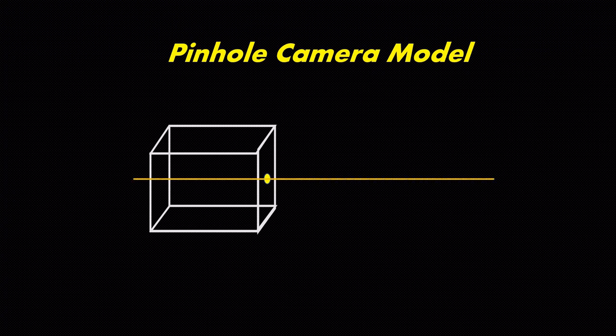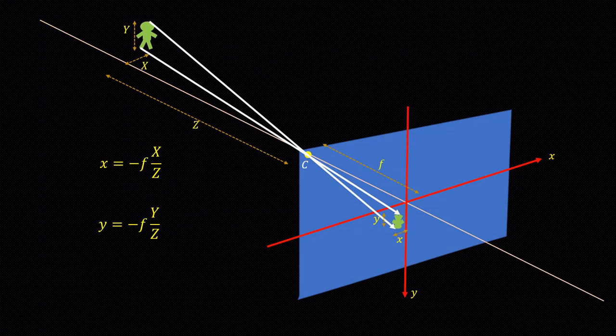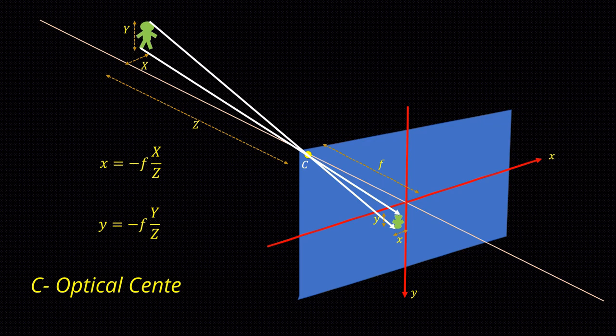Now let's look at the pinhole camera. Light passes through a pinhole and inverted image is formed at the back. Image plane is situated at a distance f from optical center. Here also the dimensions of the image obtained is shown in the equation. Negative sign signifies that the image is inverted.